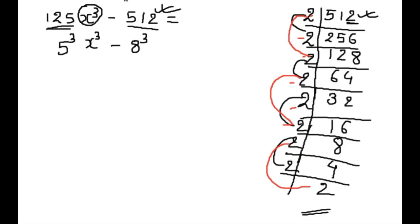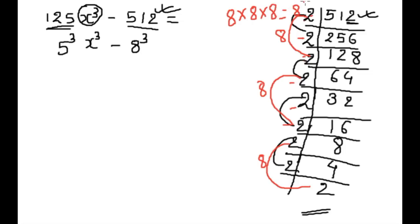So this is a pair of 8. Two into two into two is 8. We have two complete groups of three 2s — this is 8 and 8. So this is a complete pair of 8. It can be written as 8 into 8 into 8, which is 8 cube. So we can write: 512 is equal to cube of 8.